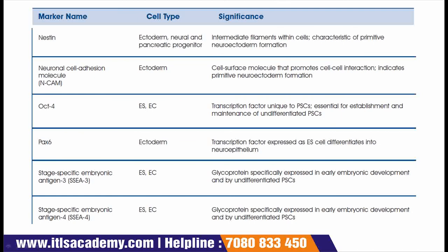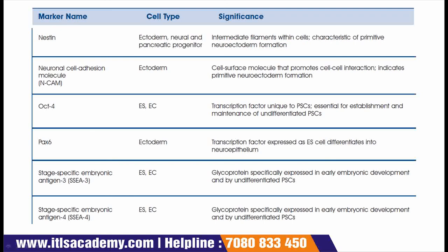The next marker is nestin, but this time it is for ectoderm, neural, and pancreatic progenitors together. Its significance is that nestin is an intermediate filament within cells characteristic of primitive neuroectoderm formation. The next marker is NCAM, or neuronal cell adhesion molecule, for ectoderm. NCAM is a cell surface molecule that promotes cell-cell interaction and indicates primitive neuroectoderm formation.